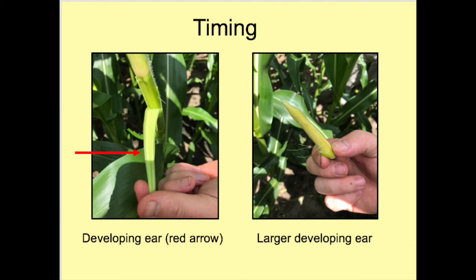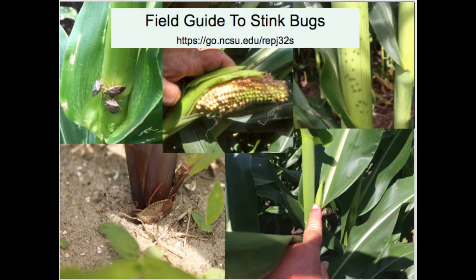The second critical factor is timing. The most critical time to treat is from V14 to VT, which is just before the primary ear is exposed. Aim to control stink bugs while the primary ear is between these stages, as you see in these images, but preferably on the early side to avoid banana ears.